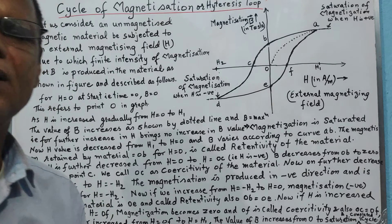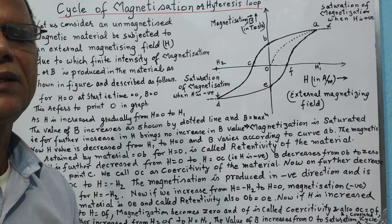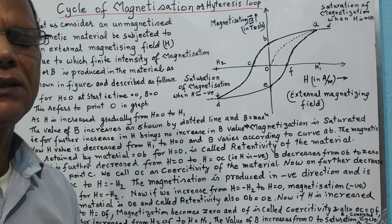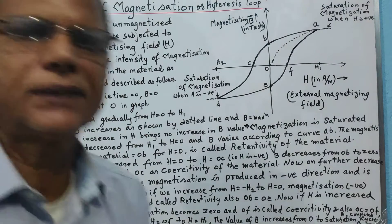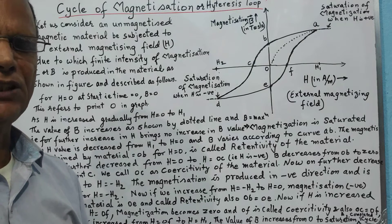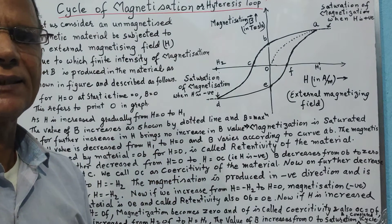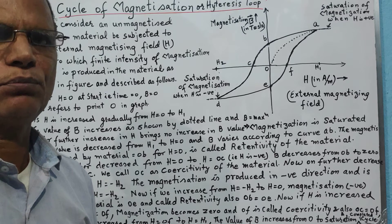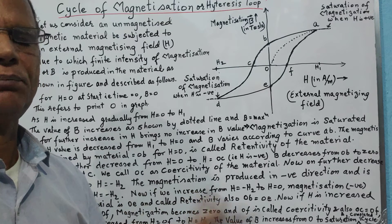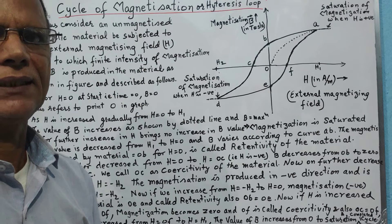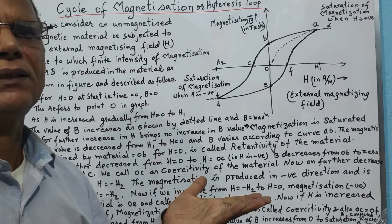Today we are going to talk about the cycle of magnetization, which is also called the hysteresis loop. When we magnetize a magnetic material — say a piece of iron which is unmagnetized — at the elementary level each atom is a magnet with a non-zero magnetic dipole moment, but since they are randomly arranged they cancel each other's effect, so net magnetism does not appear outside the material.